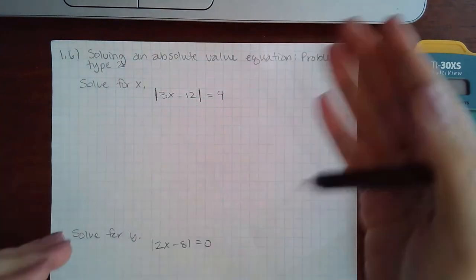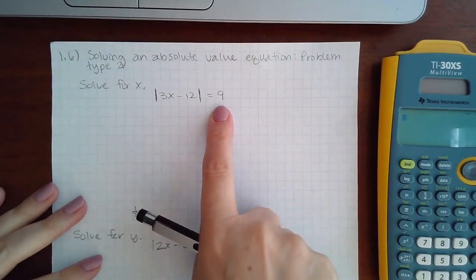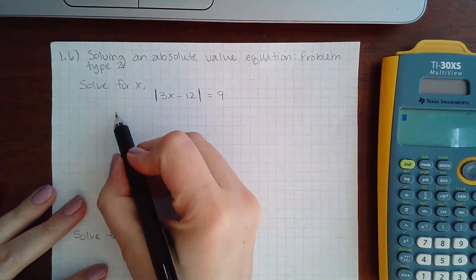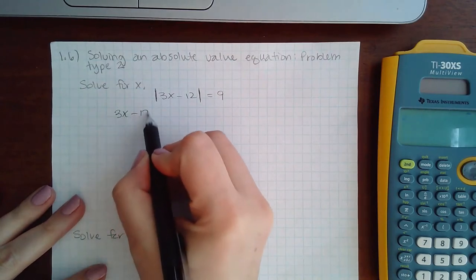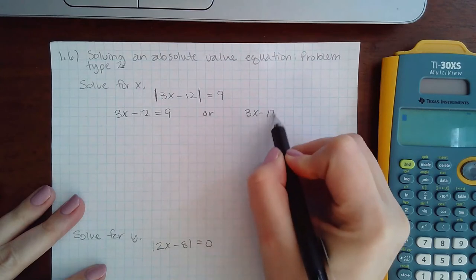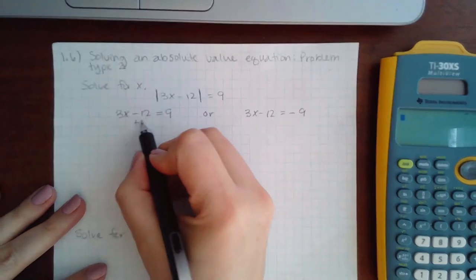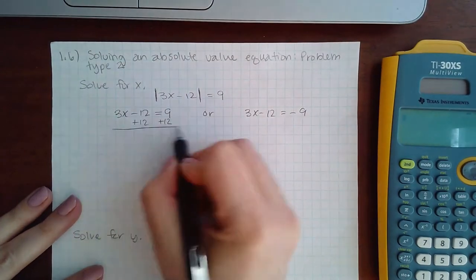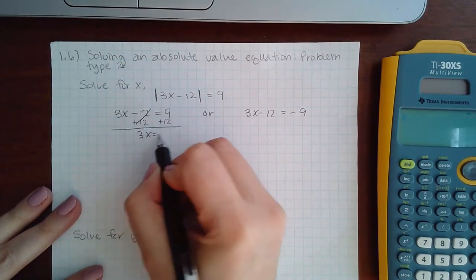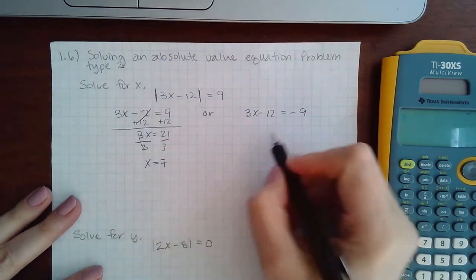So immediately I'm going to jump to the three different cases. Since this is a positive number, I'm going to take what's on the inside and set it equal to the positive value, and then again what is on the inside equal to the negative value. Then I would start to solve this equation.